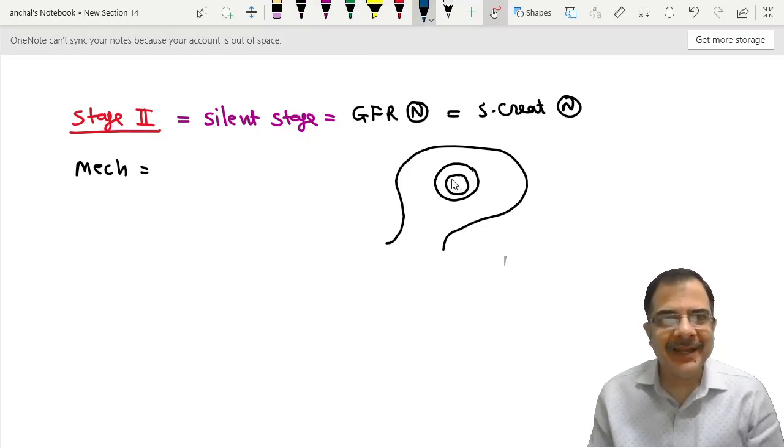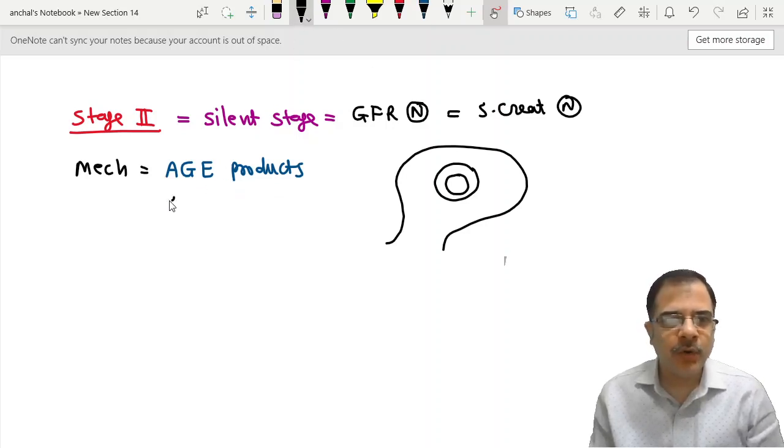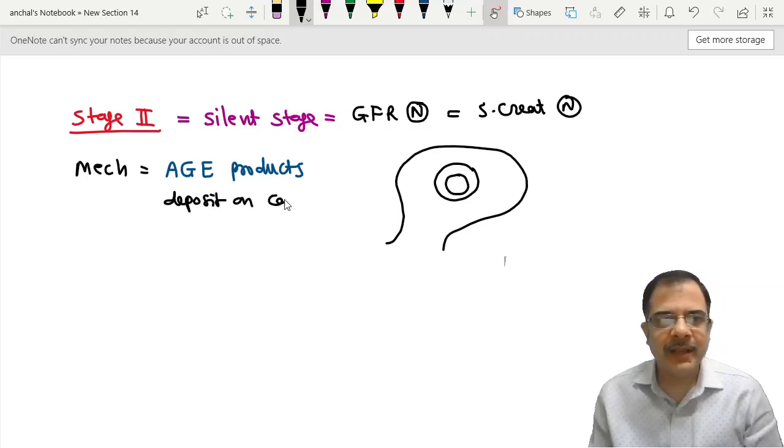Some AGE products. AGE products are advanced glycosylation end products. These are just proteins attaching with glucose, and they change their structure and function. So these AGE products deposit on capillary endothelial layer.